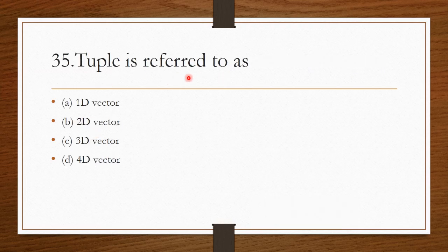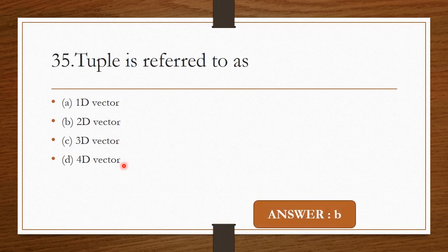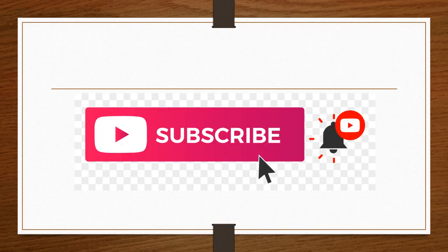Question 34: Tuple is referred to as — 1D vector, 2D vector, 3D vector, or 4D vector. Tuple is referred to as a 2D vector. I hope you all have understood the video. If you like this video, kindly subscribe to my channel and share with your friends. Thank you.